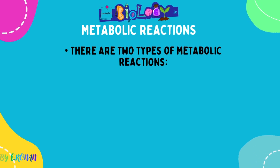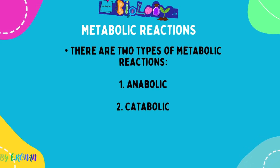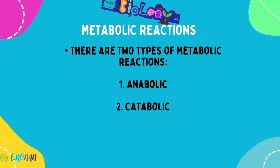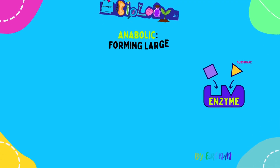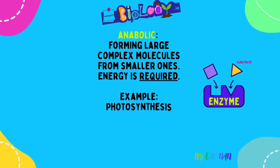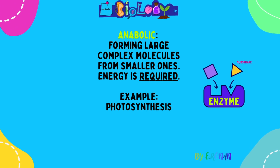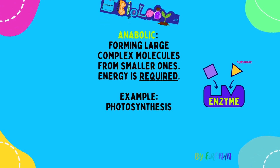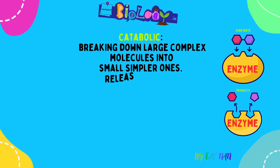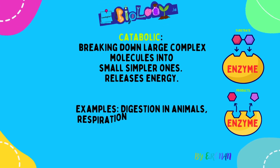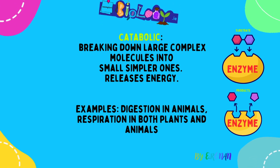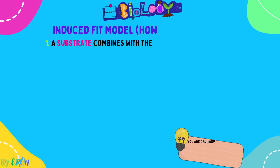There are two types of metabolic reactions we need to know: anabolic and catabolic. Anabolic reactions combine smaller molecules to form larger ones, and energy is required to do that. Examples: photosynthesis in a plant, and protein synthesis in an animal. Catabolic reactions break down large complex molecules into smaller simpler ones, releasing cellular energy. Examples include digestion in animals or respiration in both plants and animals. Remember: a cat never built anything — so catabolic means breakdown.